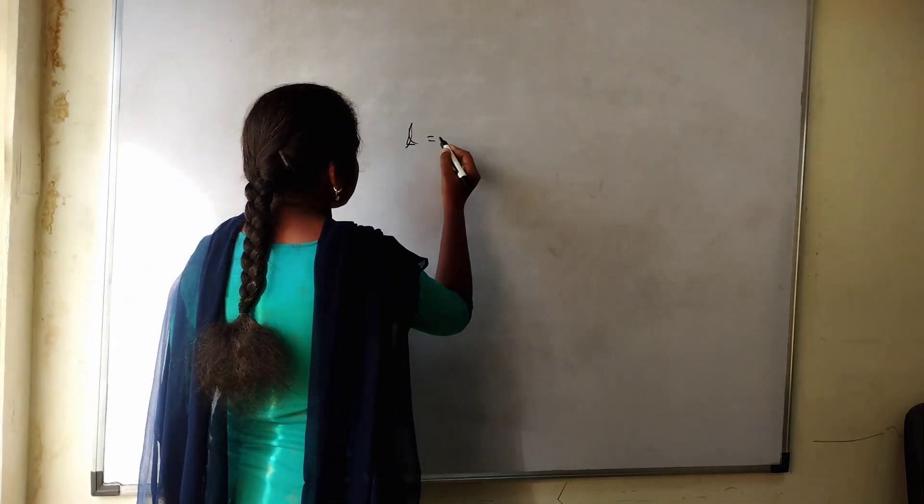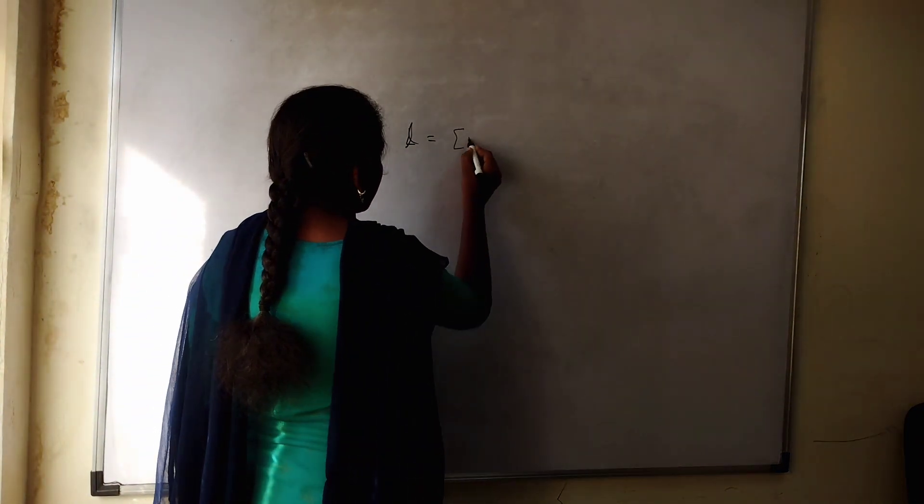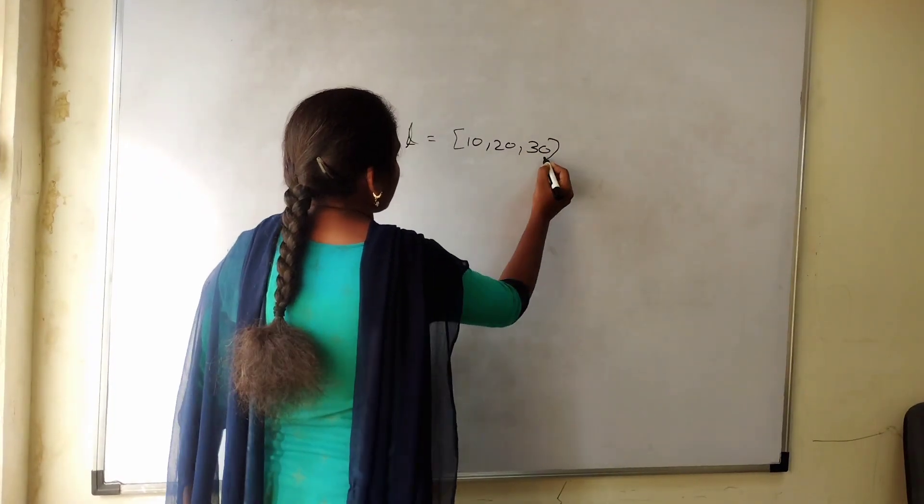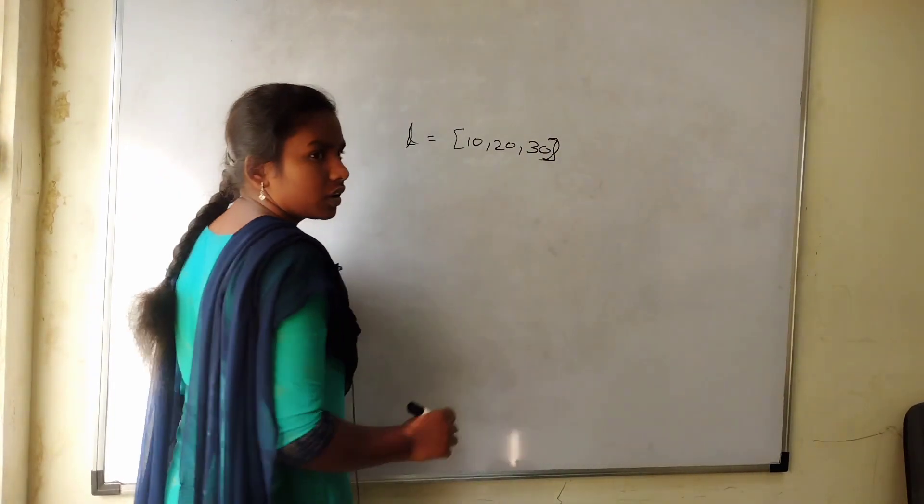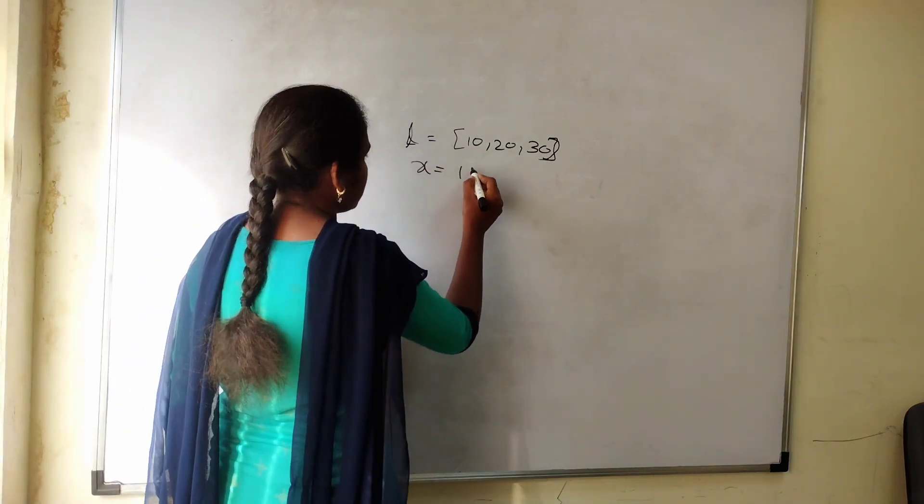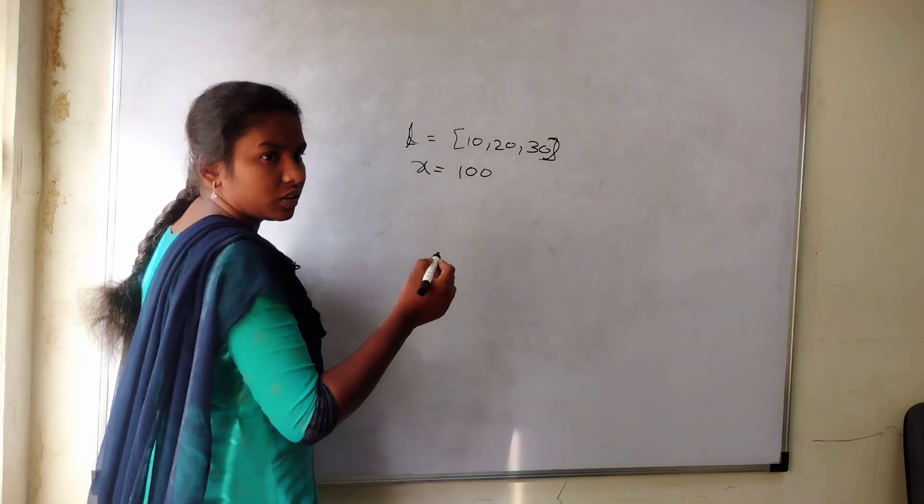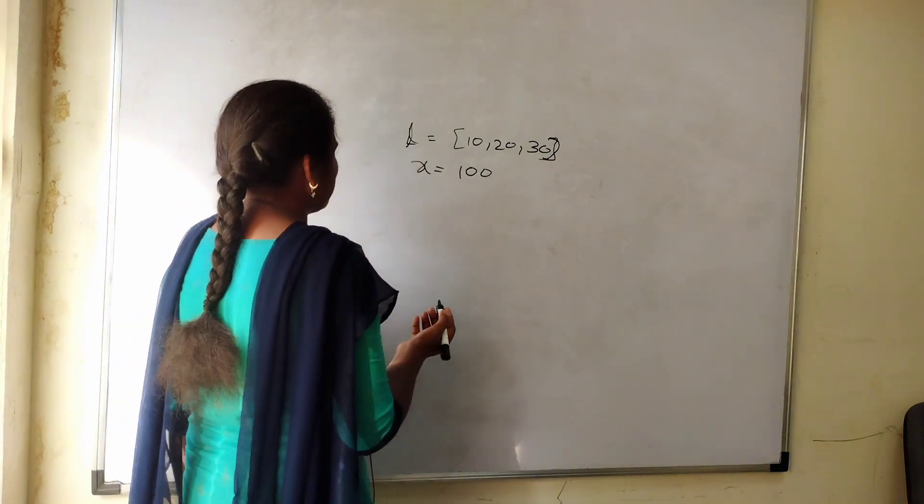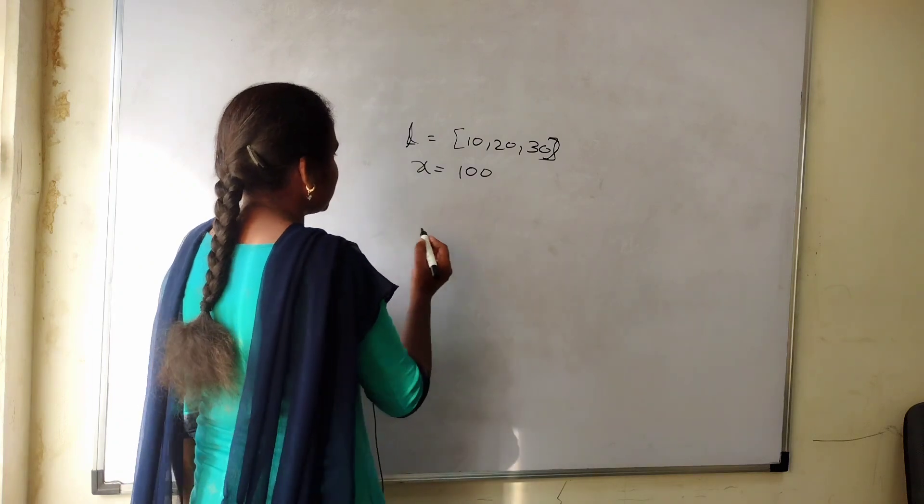If we are taking one list, 10, 20, 30. Now I want to add element x. x equal to, I want to take 100. No, just add x only. String you add it. I don't want to add number. Okay. You tell me x equal to 100. That is fine. Now what you will do now?